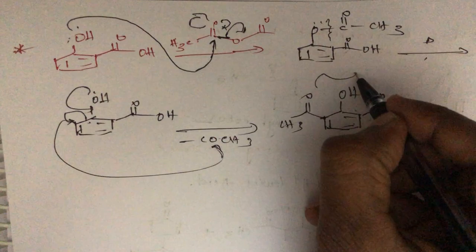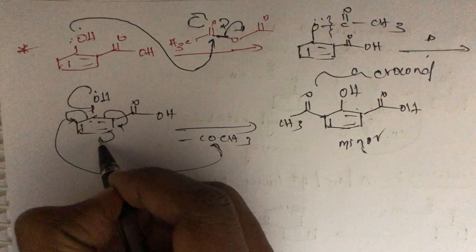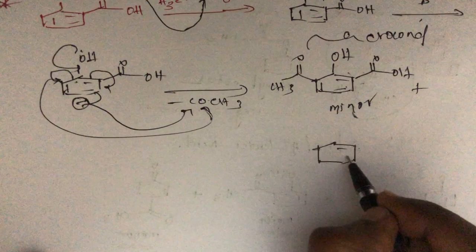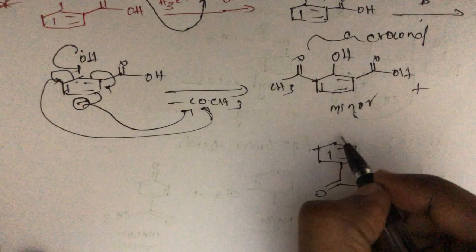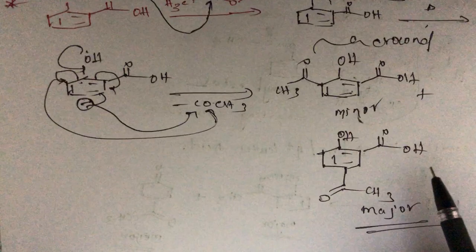The lone pair of electrons migrates here, this bond migrates here, this bond migrates here giving a negative charge. This negative charge attacks at the para position. We get the product with CH3 at para, OH, and C double bond O-OH. This is the major product because there is no crowding at the para position.